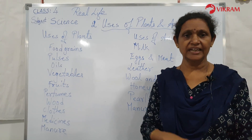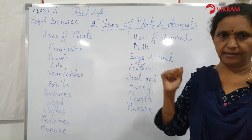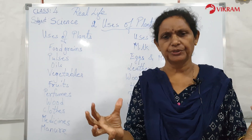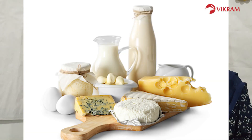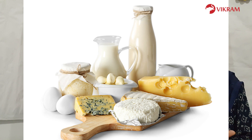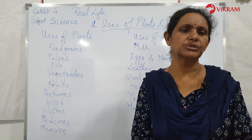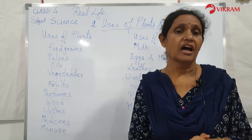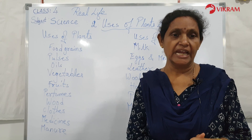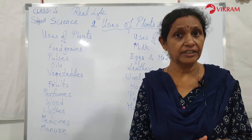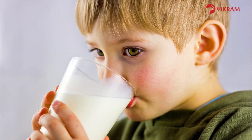We get the following products from animals: milk, eggs, meat, leather, wool, silk, honey, pearls, and manure. Milk is a complete food — we get butter, curd, and ghee from milk. The milk of goats and camels is also used as a food item in some parts of the country.